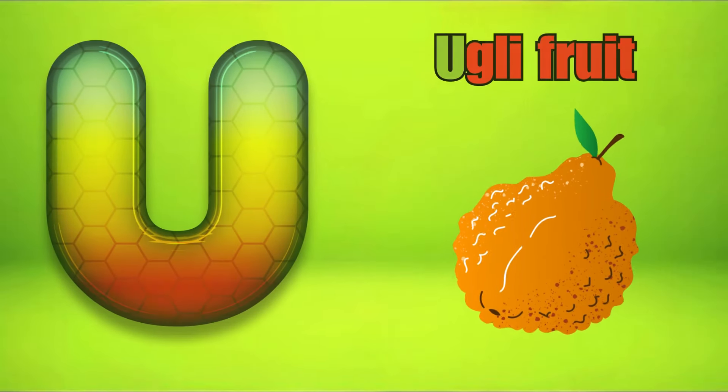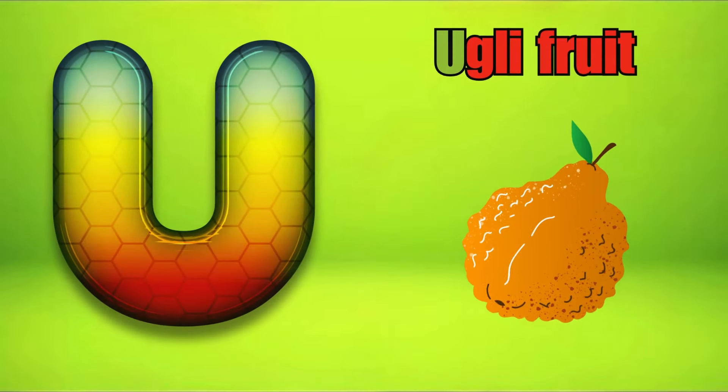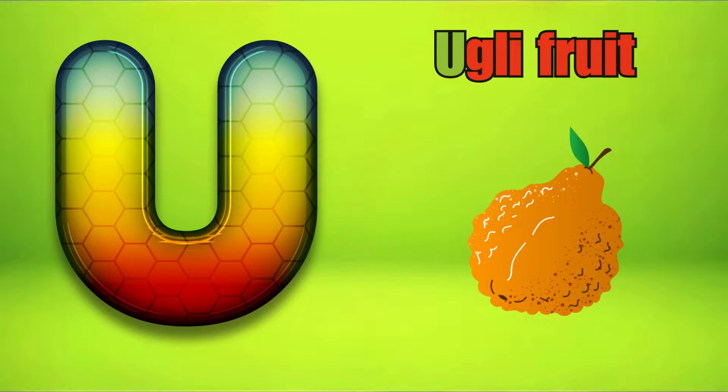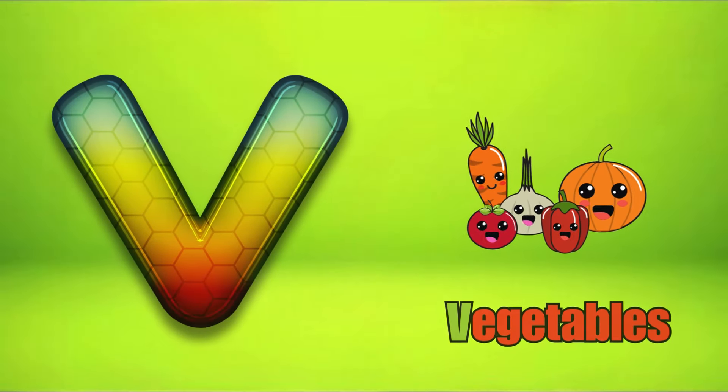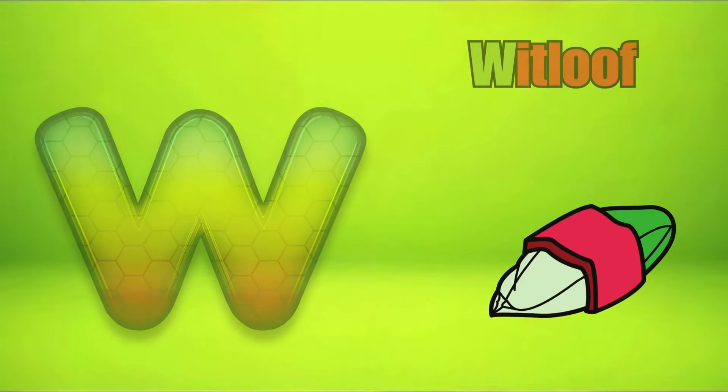U is for Ugly Fruit, U, U, Ugly Fruit. V is for Vegetables, V, V, Vegetables.